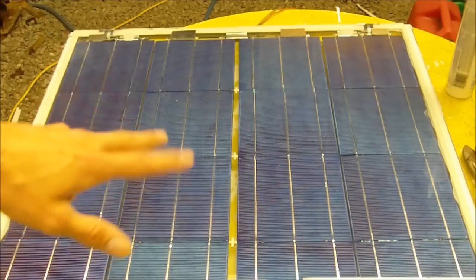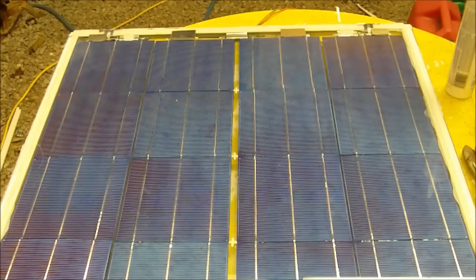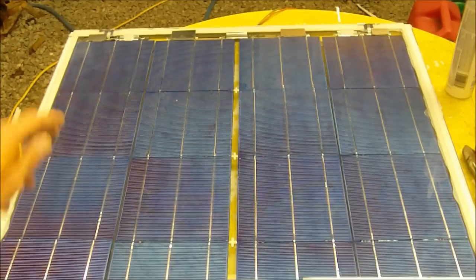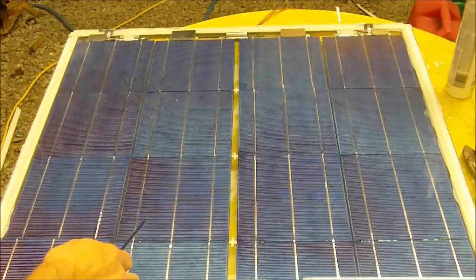The more of these cells you have in series, connected from positive to negative or negative to positive throughout the panel, the higher voltage you have inside your solar panel.